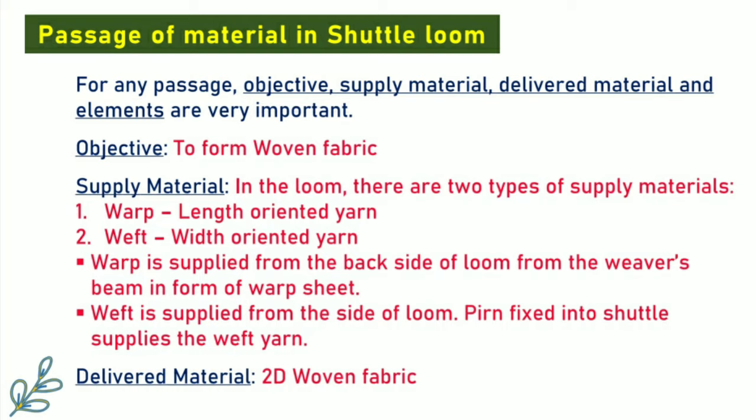For any passage, the objective, supply material, delivered material and elements are very important. Here, the objective is to form woven fabric. In the loom, there are two types of supply materials: warp and weft. Warp is length-oriented yarn and weft is width-oriented yarn. Warp is supplied from the back side of the loom from the weaver's beam in the form of a warp sheet.